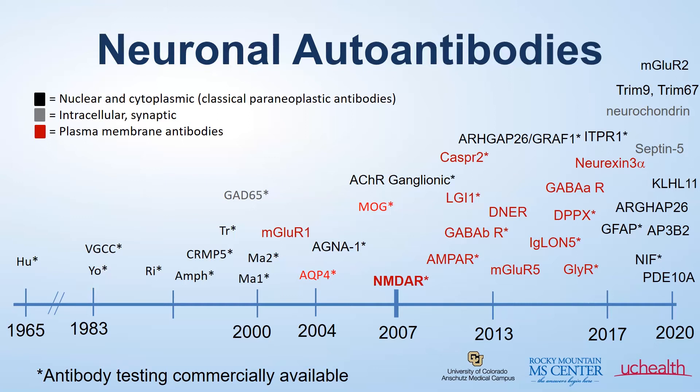In 2004, another landmark year, neuromyelitis optica, or NMO spectrum disease, was described in the setting of a positive aquaporin-4 antibody by Dr. Vande Lennon at the Mayo Clinic. This was one of the first examples of an autoantibody that was truly pathogenic, meaning the antibody itself was directly attacking the brain or spinal cord.